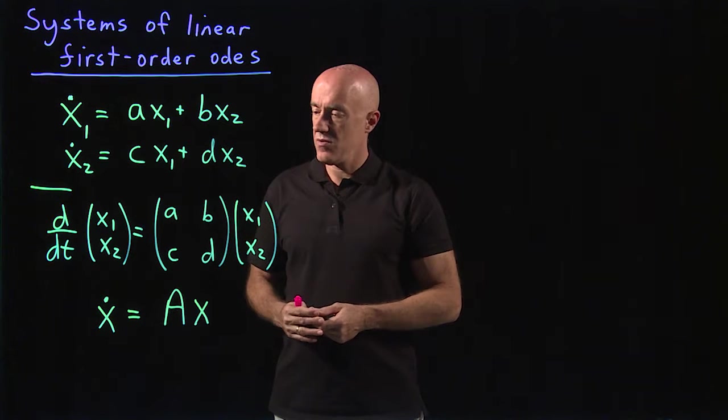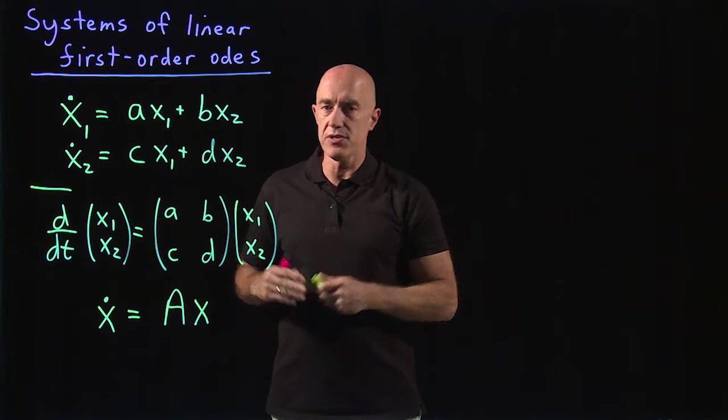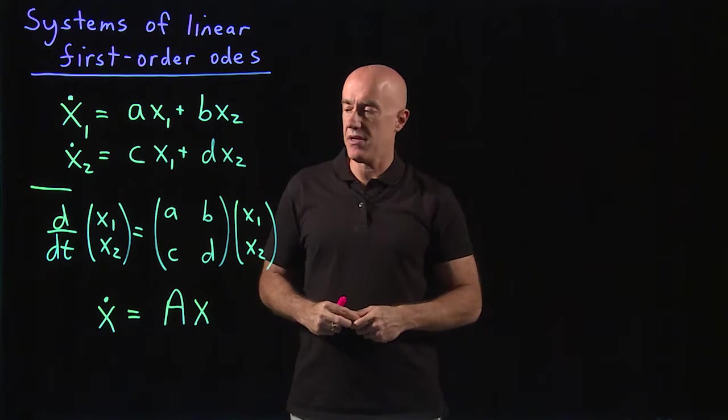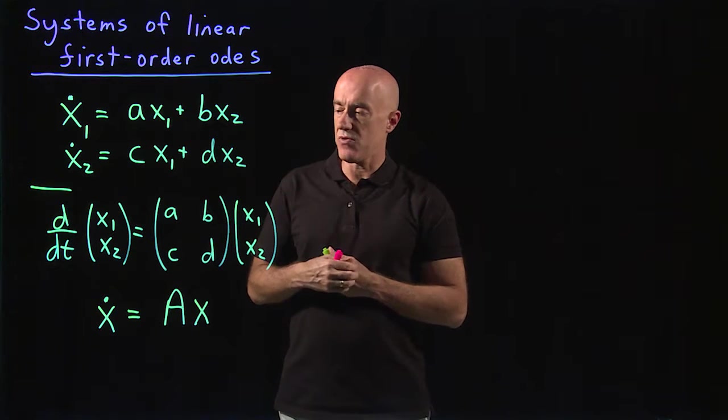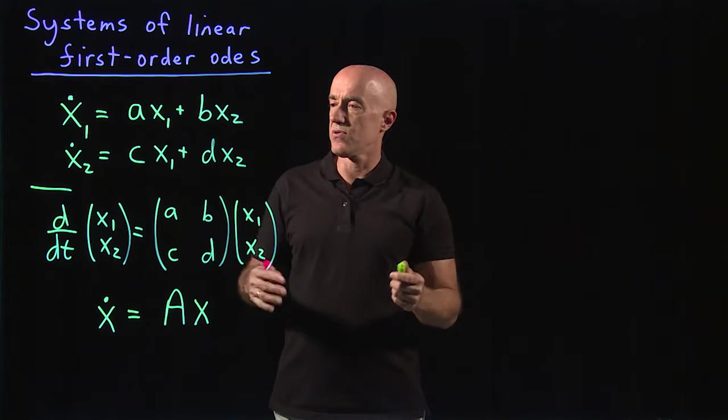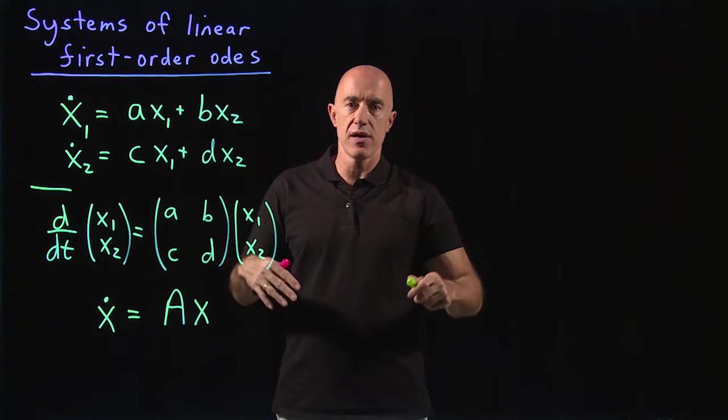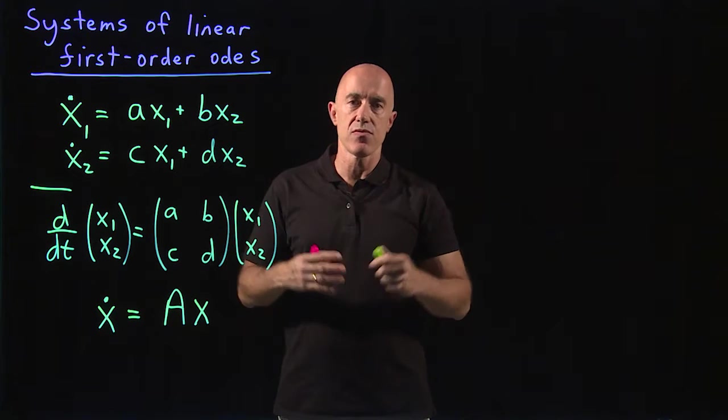To solve this, we're going to use an ansatz, and we're also going to use the principle of superposition. So we're going to look for solutions following our ansatz, and then when we find solutions, two solutions in this case, we'll multiply them by constants and add them together to get the general solution.